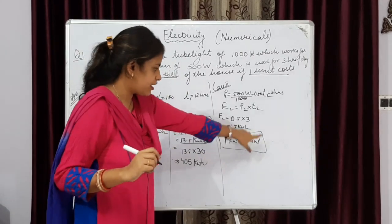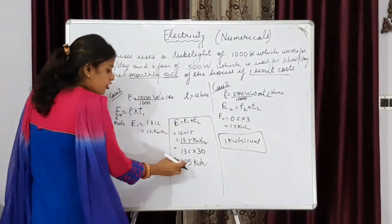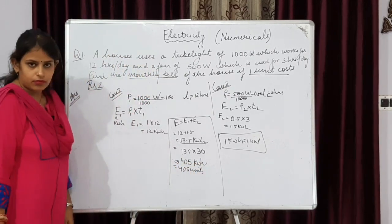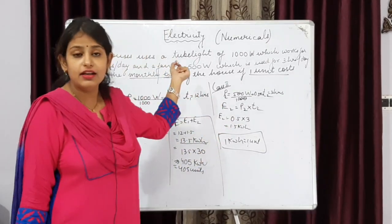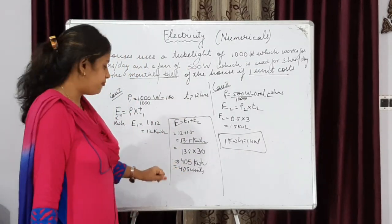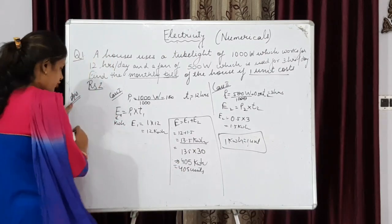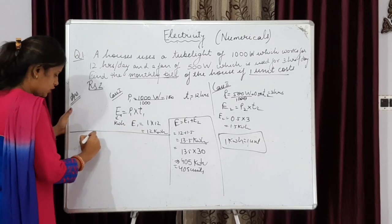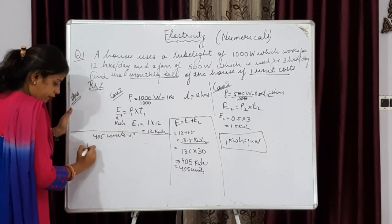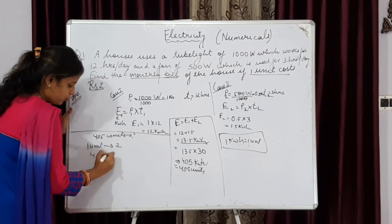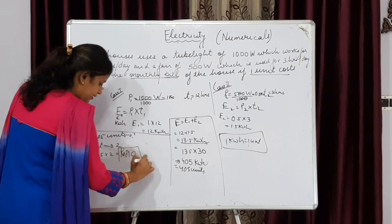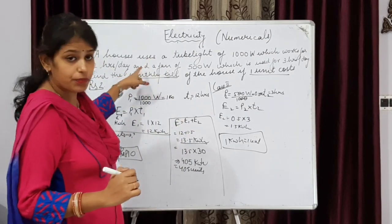One kilowatt-hour equals one unit. So 405 kilowatt-hour equals 405 units. It means for a particular month, the tube light and fan consume 405 units. Now one unit costs rupees 2. We have to find the cost of 405 units: 1 unit costs Rs. 2, so 405 units will cost Rs. 810. This is the monthly bill for this home.